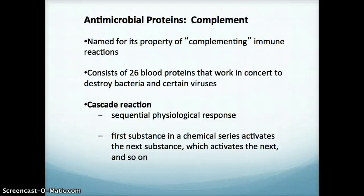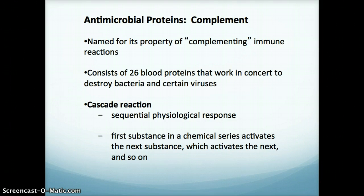Some other antimicrobial proteins are complement antimicrobial proteins, named for the property that they complement the immune reaction. It's a complicated cascade reaction. It consists of 26 blood proteins that all work together to destroy bacteria and some viruses. A cascade reaction means a sequential physiological response — as one substance in a chemical series is produced, it activates the next substance, which activates the one after that, creating this cascade that performs the function.